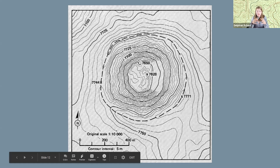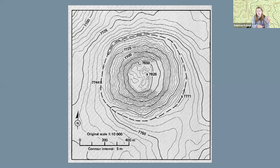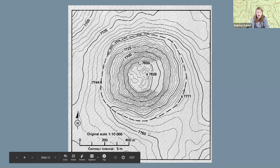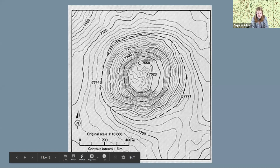The contour interval shown here is five meters, meaning between every line there's a five-meter change in elevation. For lines that are really far apart, the slope is very gentle — you have to travel a wide distance to change elevation by only five meters. If lines are really close together, you're going up five meters in a very short horizontal distance, meaning a very steep slope. So the closer the lines are together, the steeper the slope. This is useful if you're thinking about where to go hiking, build a trail, or build a cabin.